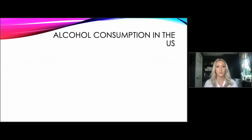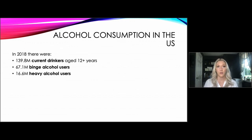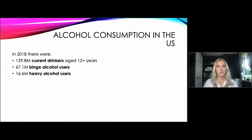Looking at alcohol consumption in the United States: in 2018 there were 139.8 million current drinkers aged 12 years and older. A current drinker is one who has had at least one drink in the past 30 days. There were 67.1 million binge alcohol users — binge use is described as having five or more drinks in a row on a single occasion. There were 16.6 million heavy alcohol users; heavy use is considered five or more drinks on the same occasion on each of five days in the past 30 days, or more than one drink a day for women and more than two drinks a day for men, or any drinking at all by pregnant women or underage youth. Nearly half of current drinkers are binge drinkers and one-eighth are heavy drinkers.